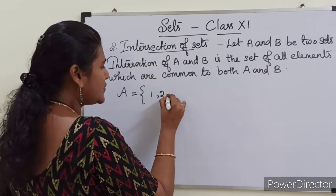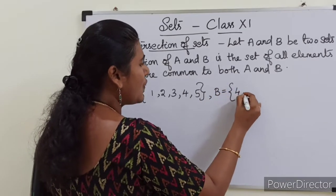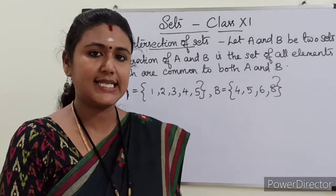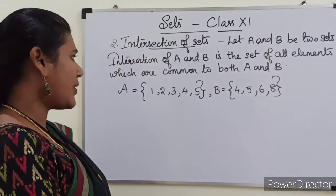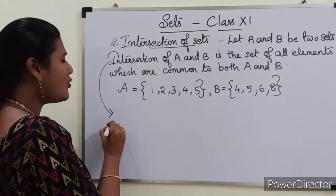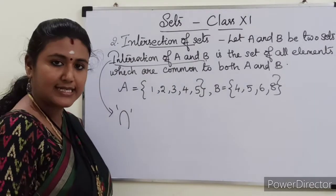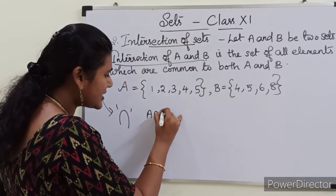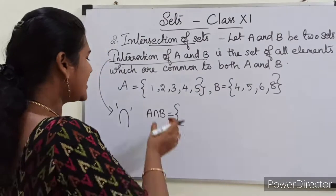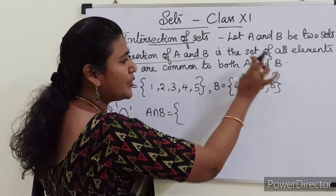We will consider one example. Set A is equal to {1, 2, 3, 4, 5} and set B is equal to {4, 5, 6, 8}. So we have here two sets A and B. Now we will see the definition one more time — A intersection B. We will use this symbol to denote intersection, and we read it as A intersection B. So A intersection B is the set of all elements which are common to both A and B.